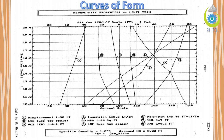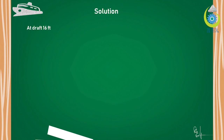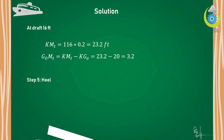This is the graph of curves of form. There are many lines on this graph, each representing a property of the ship. At the bottom of the graph you can see different properties such as displacement, tons per inch immersion, and waterplane area WPA. Here we are concerned with KMT, the keel to transverse metacenter distance. The scale shows that one unit equals 0.2 feet. At the draft of 16 feet, draw a horizontal line — it touches line number 8. From line 8, read the value: 116. Multiply by 0.2 feet to obtain KMT.